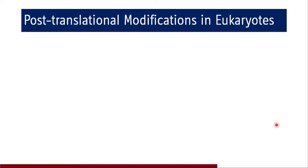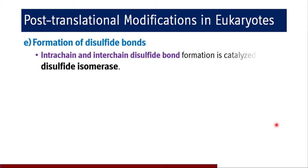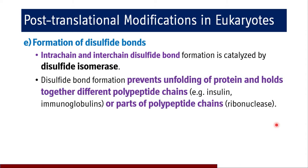Formation of disulfide bonds is a reversible type of post-translational modification. Intra-chain and inter-chain disulfide bond formation is catalyzed by the enzyme disulfide isomerase. Disulfide bond formation prevents unfolding of proteins and holds together different polypeptide chains, as seen in insulin and immunoglobulins, or within parts of a polypeptide chain such as ribonuclease, which has both intra- and inter-chain disulfide bonds.